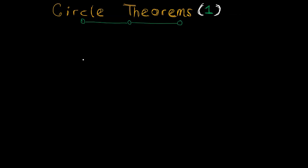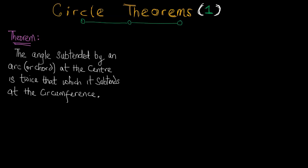In this video we would be considering one of the theorems. Here is the theorem: it states that the angle subtended by an arc or chord at the center of a circle is twice that which is obtained at the circumference. I'm not going to be proving this theorem here; I'm just going to explain it and rely on it to solve one or two problems.